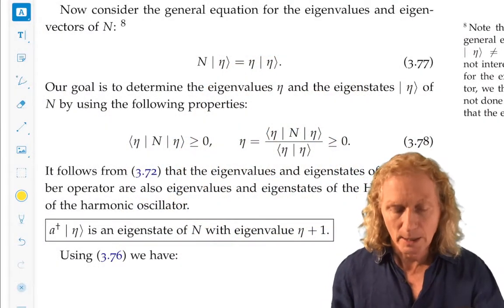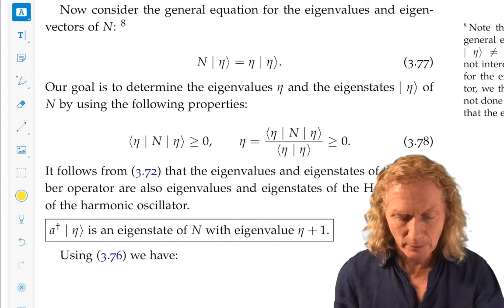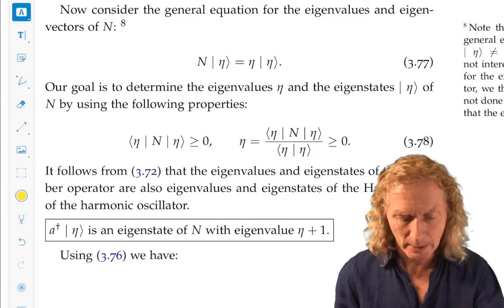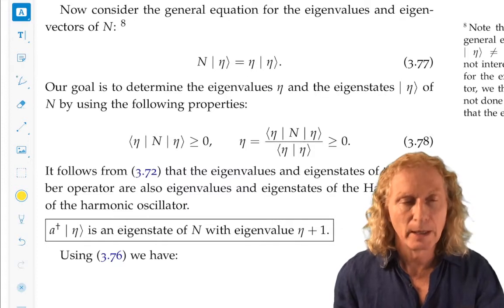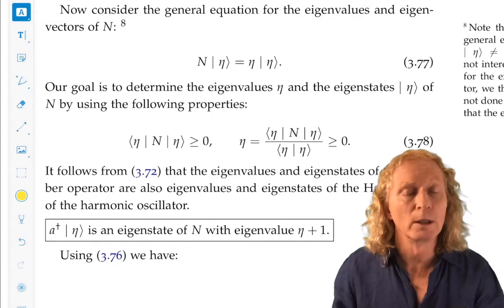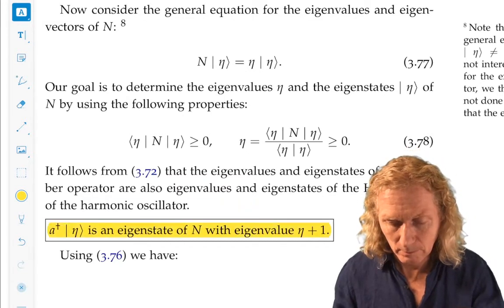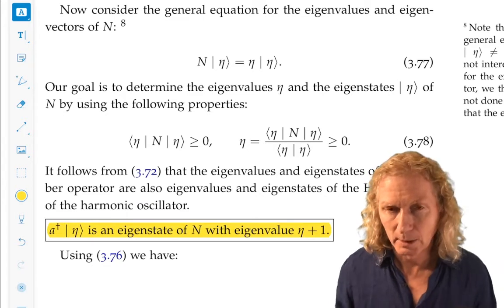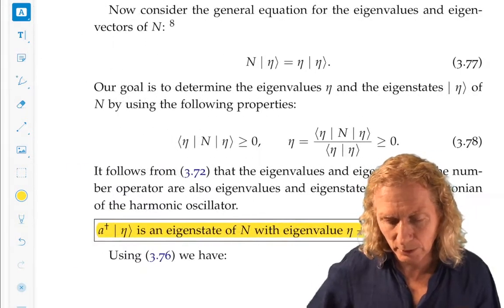Now remember that if we have an eigenstate ket eta, we can derive another eigenstate that has eigenvalue one larger. Keep that in mind.